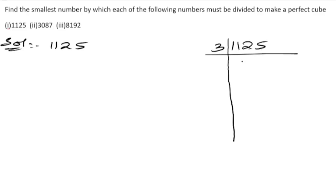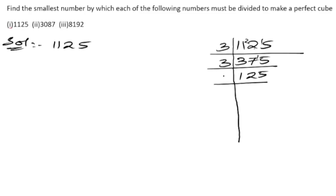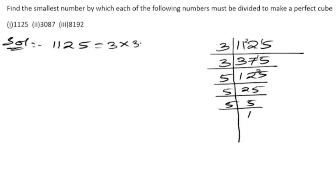Dividing by 3: 3 × 3 = 9, remainder left, then continuing the division steps. Then dividing by 5 repeatedly: 5 × 5 = 25, 5 × 5 = 25, 5 × 1 = 5. So the prime factors of 1125 are 3 × 3 × 5 × 5 × 5. Five is in a complete group of three.